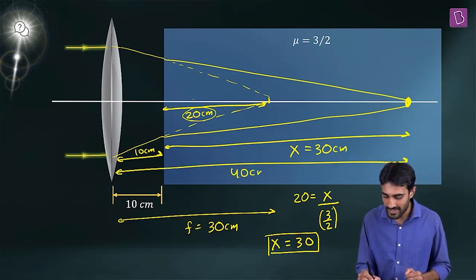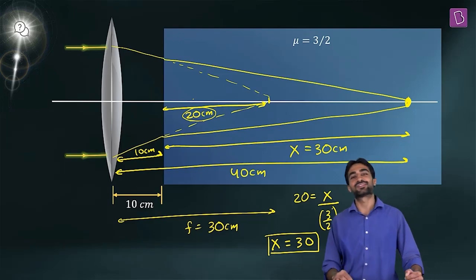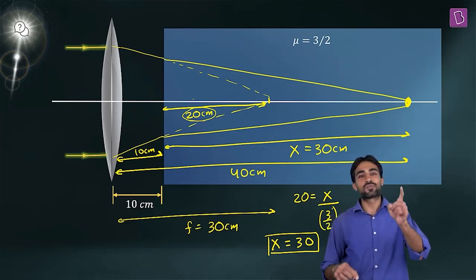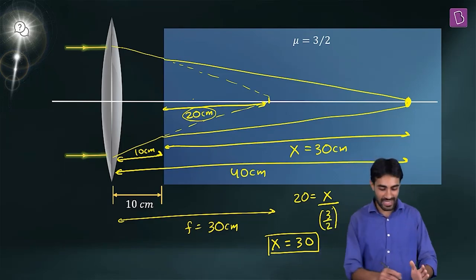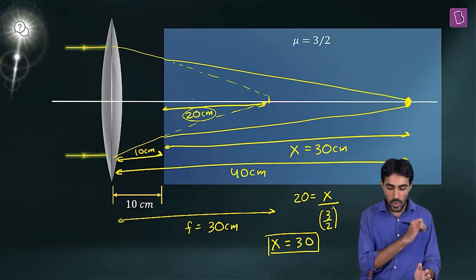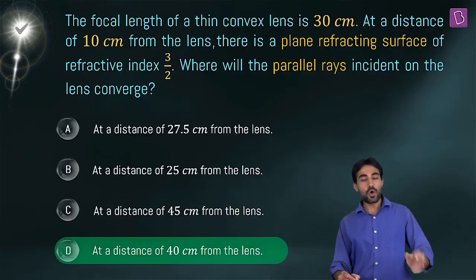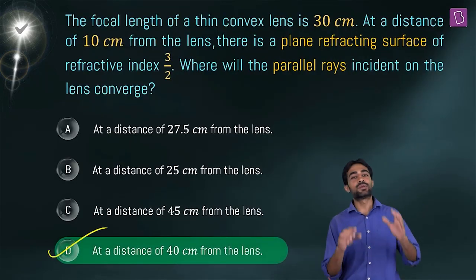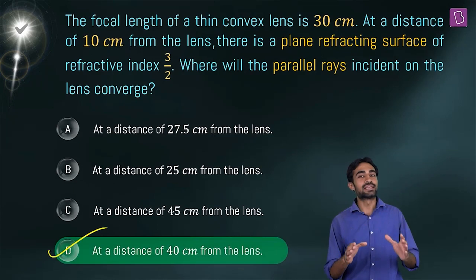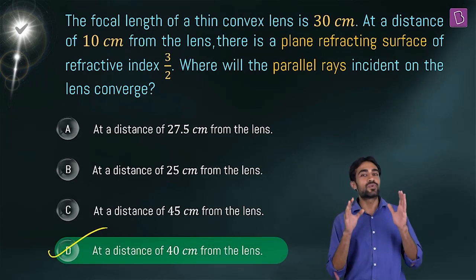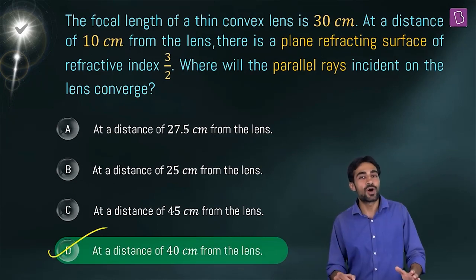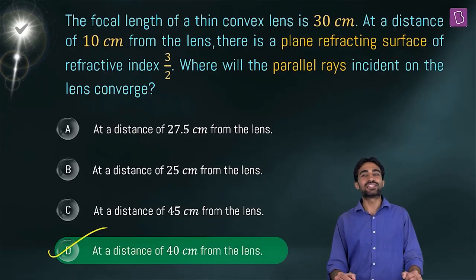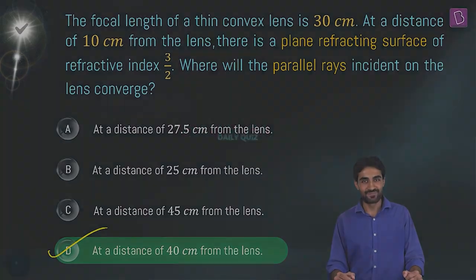So 40 cm is the right answer. The rays will actually converge at a distance of 40 cm from the lens. Option D is the right answer for this question.